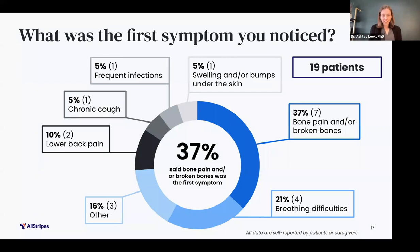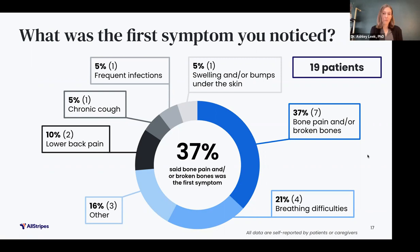So we next wanted to understand the initial presentation of CLAs. We asked participants what was the first CLA symptom that they noticed. We found that 37% first noticed bone pain and/or broken bones, shown here in darker blue; 21% noticed breathing difficulties, shown in medium blue; and 42% experienced other first symptoms like lower back pain, chronic cough, frequent infections, and skin bumps. The most common first symptoms — bone pain and/or broken bones as well as breathing difficulties — are consistent with the medical literature that suggests bones and lungs are most often affected by these conditions.